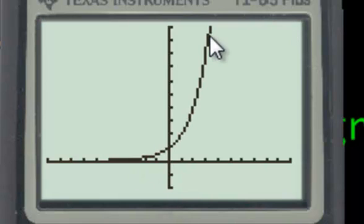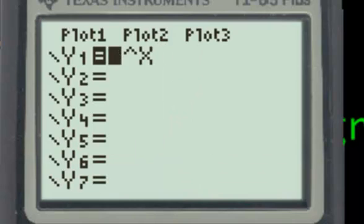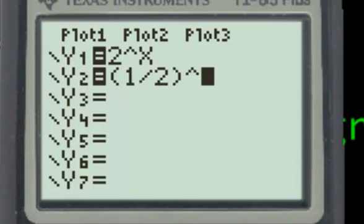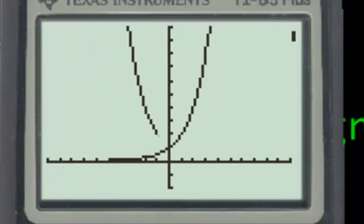Anyway, there's our exponential growth and I'm going to write in the other graph too. In y2, I'm going to put 1 half, put it in brackets just to make sure it works. 1 half, exponent x. And it should be exponential decay.